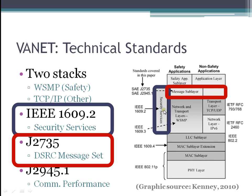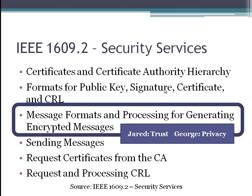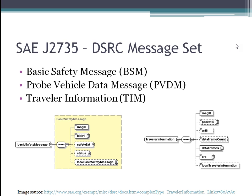The important point is to know which technical standards we're addressing. In IEEE 1609.2, the message formats and processing area is where we're focusing — Jared is handling trust, and I'm handling privacy. The first non-draft version of 1609.2 just came out. SAE J2735 is the DSRC message set — the dedicated short-range communications message set.